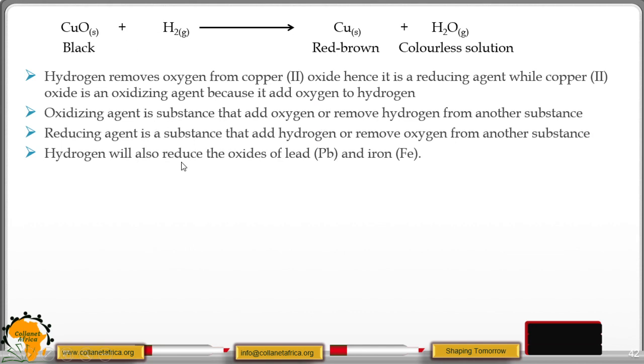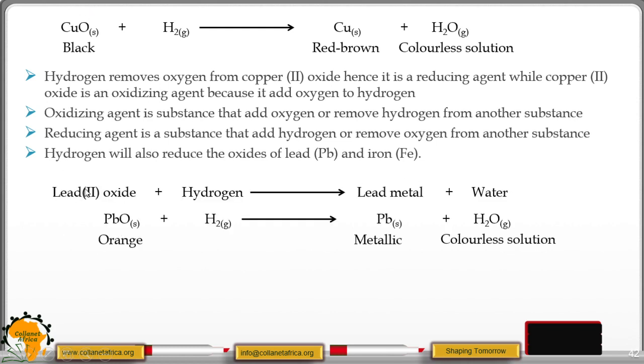Hydrogen will also reduce the oxides of lead and iron. These are the equations. Lead oxide plus hydrogen, you get lead metal plus water.